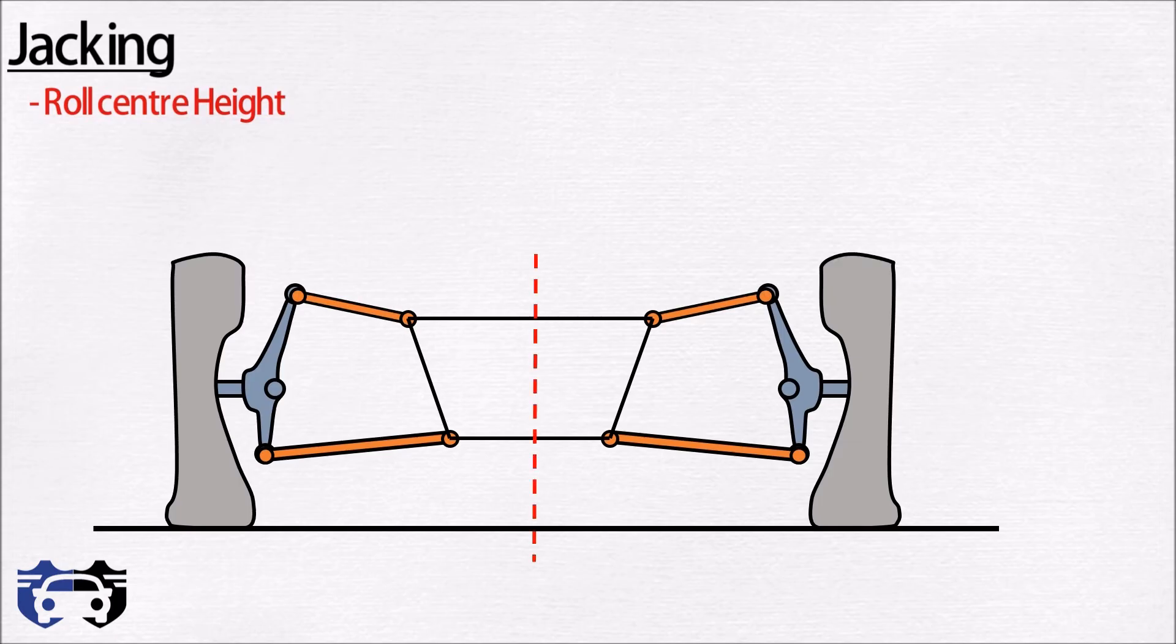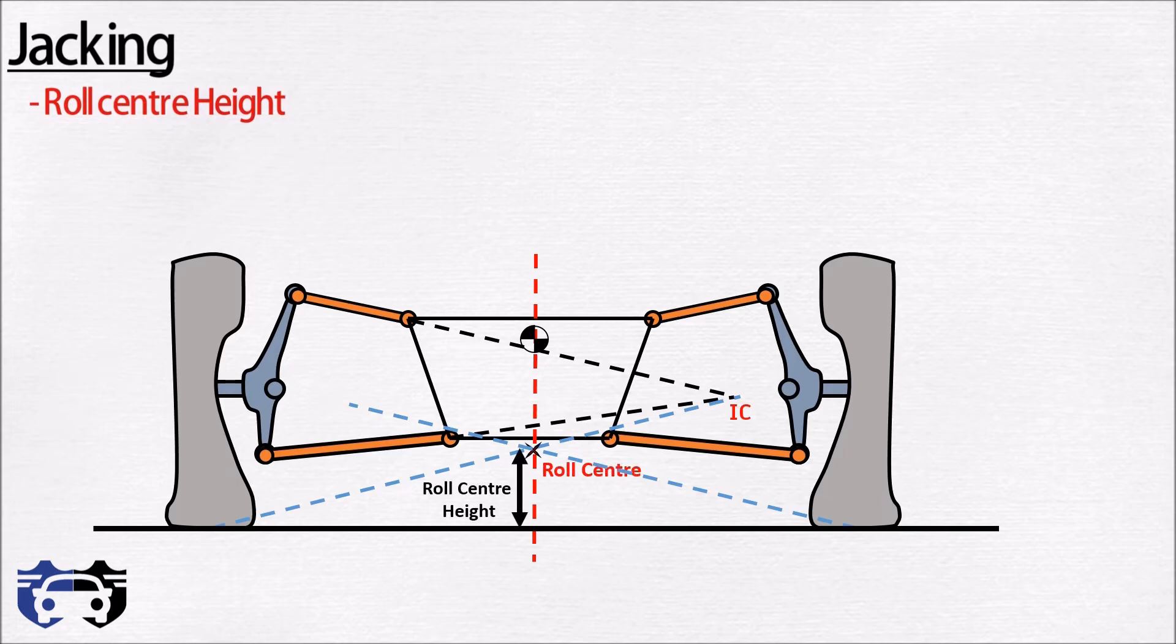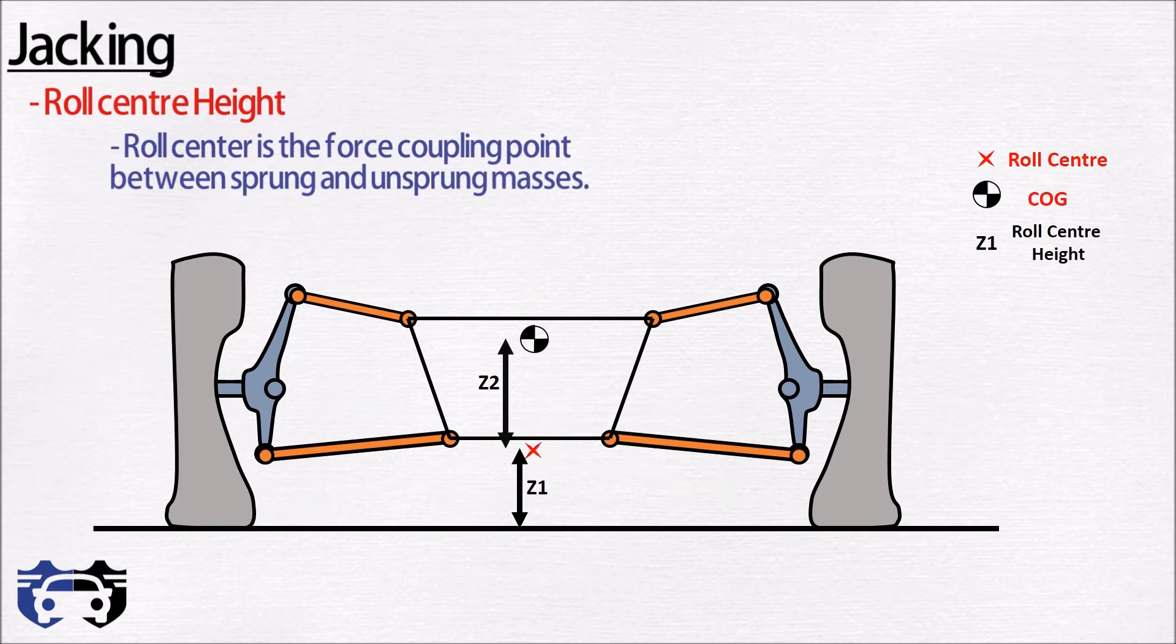Another important term in suspension geometry is jacking. For understanding jacking we need to understand the roll center height. So I explained in my earlier video on roll and steer that if we extend the line from the center of tire ground contact patch till the instant center for both left and right tires, then the point where these two lines intersect is called the roll center, and the height of this point from the ground is called the roll center height. The position of roll center with respect to center of gravity and ground affects the handling behavior of car. Basically roll center is the force coupling point between sprung and unsprung mass of vehicle. Suppose you are taking a right turn, the car will experience the centrifugal force Fc at center of gravity towards left direction, and this force will create a moment about the roll center. If we decrease the distance between the roll center and center of gravity it will lead to decrease in roll moment because the moment is given by Fc multiplied by Z2.